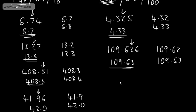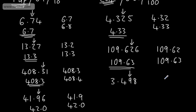Let's look at a slightly more challenging one. Let's say we've got 3.498. This time, we're focusing on the 9. So we could have, correct to two decimal places, 3.49.